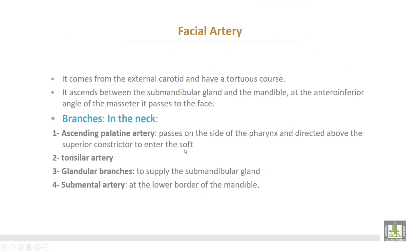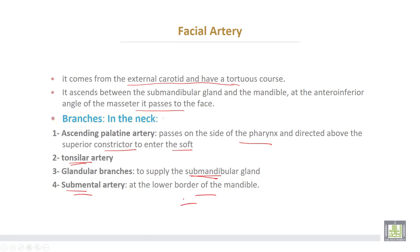The facial artery comes from the external carotid and has a tortuous course. It ascends between the submandibular gland and the mandible, and at the anterior inferior angle of the masseter it passes to the face. The branches of the facial artery in the neck include: the ascending palatine artery, which passes on the side of the pharynx and is directed above the superior constrictor to enter the soft palate; the tonsillar artery to the palatine tonsil; glandular branches to supply the submandibular gland; and the submental artery at the lower border of the mandible.